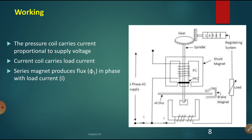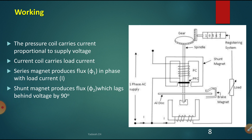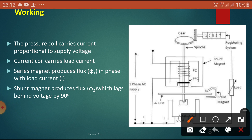The series magnet produces the flux phi 1 in phase with the load current. Phi 1 is produced in phase with the current — both are in the same direction. Whereas the phi 2 from the pressure coil — the flux produced and the voltage are displaced by 90 degrees.